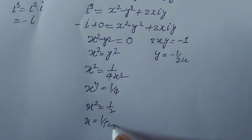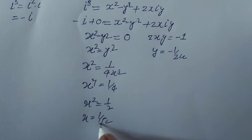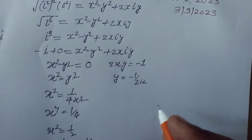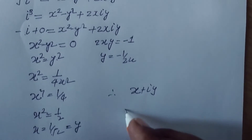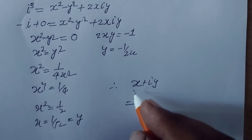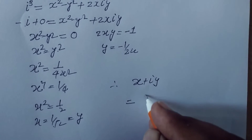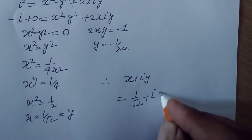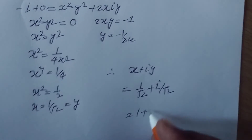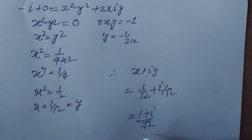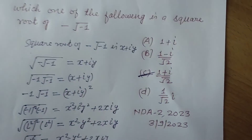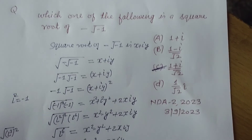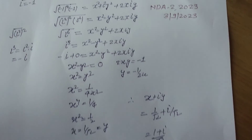So x = 1/√2, and then y = −1/(2 · 1/√2) = −1/√2. Therefore, x + iy = 1/√2 − i/√2 = (1 − i)/√2. This is the correct answer found in option C. I hope you got it — please like the video, subscribe to the channel, thanks for watching!